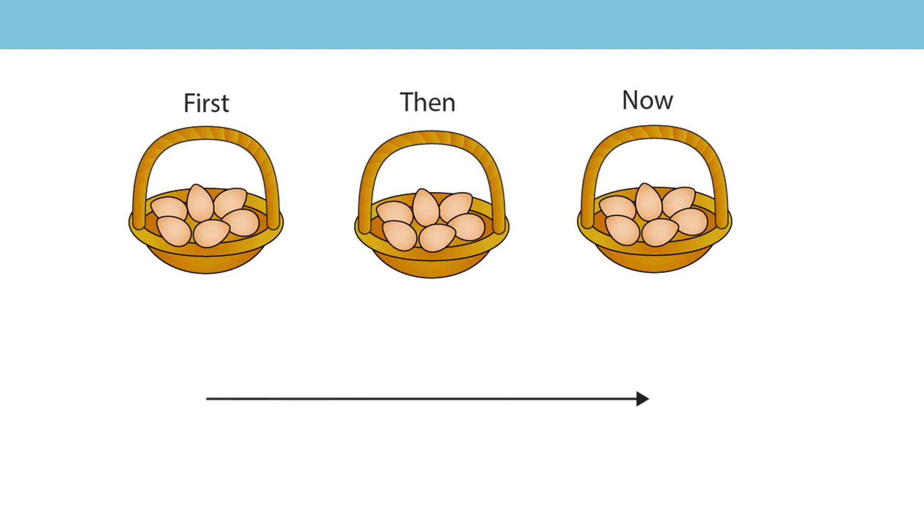Let's look at what that looks like on a number line. First, I had 6. Then I add 0. So now, I wonder if you can say it with me, I still have 6. As a number sentence, 6 eggs plus 0 eggs equals 6 eggs. When we add 0 to a number, the number remains unchanged.